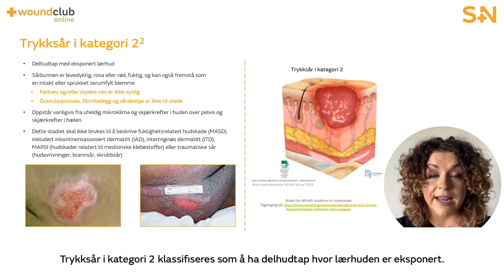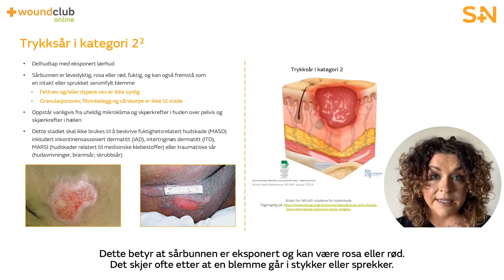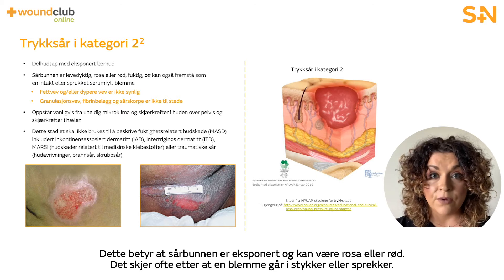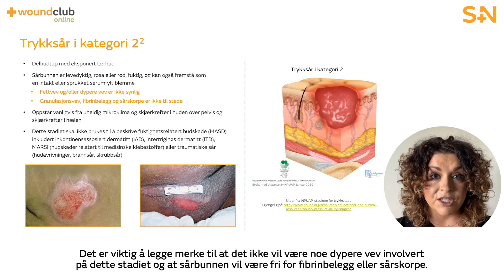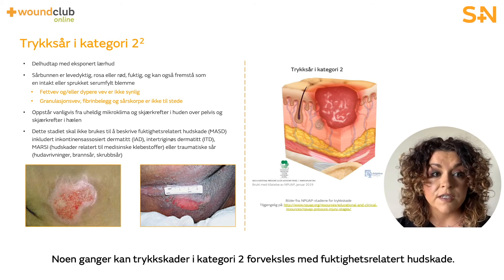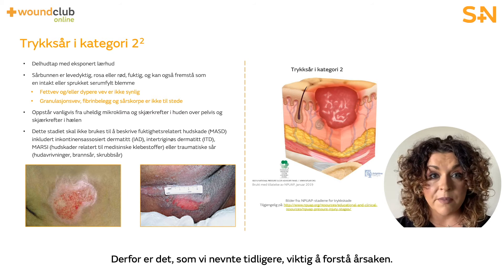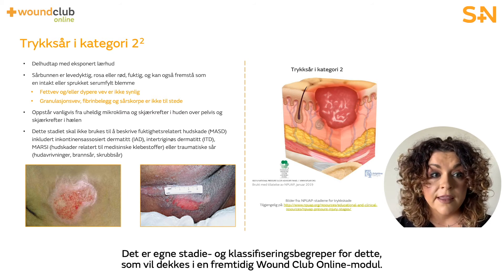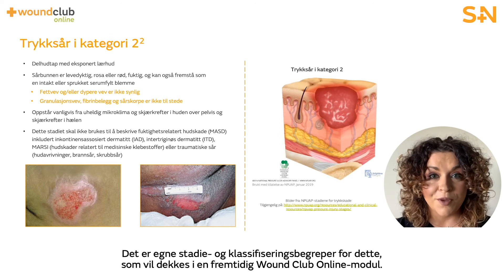Category 2 pressure ulcers are classified as having partial thickness loss of skin where the dermis is exposed. The wound bed may appear pink or red, often following the breakdown or rupture of a blister. There will be no deeper tissue involvement at this stage, and the wound bed will be free of slough and eschar. Stage 2 pressure ulcers can sometimes be confused with moisture-associated skin damage; therefore understanding the cause is really important. There are separate staging and classification terms for moisture-associated skin damage, which will be covered in a future Wound Club online module.